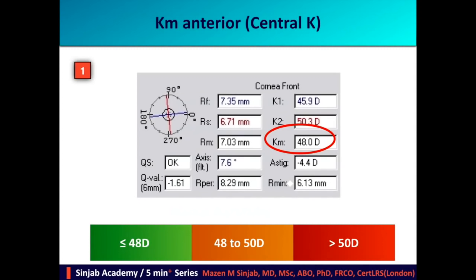Starting with the KM anterior or central K, which is the mean K on the anterior curvature map or the anterior corneal surface. The cut-off point is 48 diopters in the Scheimpflug-based topographers, but in the Placido-based topographers, the cut-off point is 47.2 diopters. This value is considered abnormal when it is between 48 and 50, and it is considered high risk when it is above 50.